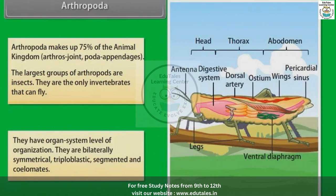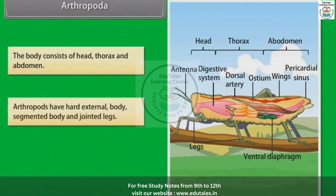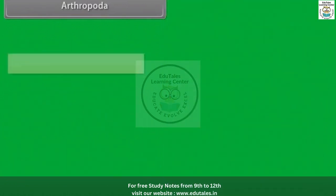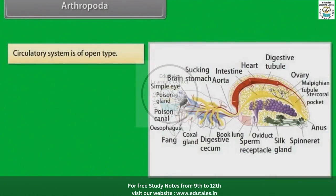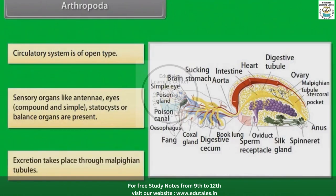Arthropods are bilaterally symmetrical, triploblastic, segmented and coelomate. The body consists of head, thorax and abdomen. Arthropods have a hard external body, segmented body and jointed legs. Respiratory organs are gills, book gills, book lungs or a tracheal system. The circulatory system is of open type. Sensory organs like antennae, eyes (compound and simple) and statocysts (balance organs) are present. Excretion takes place through Malpighian tubules.